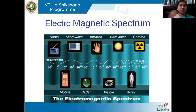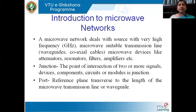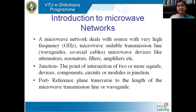A microwave network deals with a source capable of generating high-frequency signals in the gigahertz range. So the source used here is not just a signal generator as in a normal network — rather, it is a microwave source such as a reflex klystron, magnetron, traveling wave tube, or backward wave oscillator.